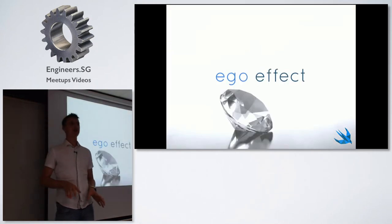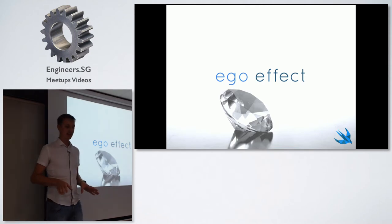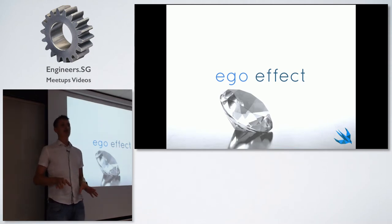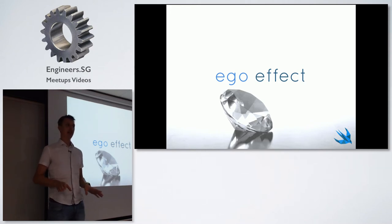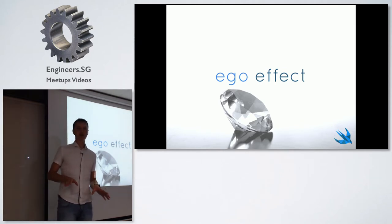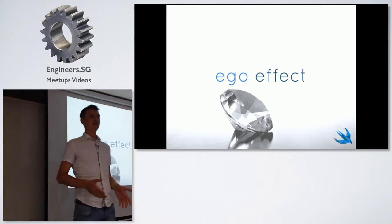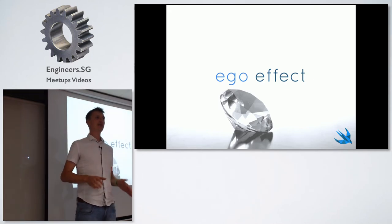Another important aspect of code review is the ego effect. This is something that drives us to write the best code we possibly can, because when we know somebody will be looking at our code, we will just write good code.